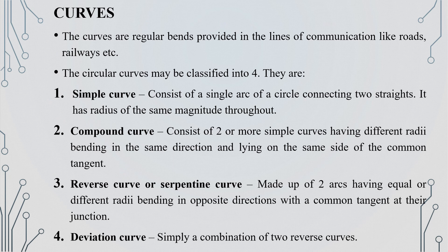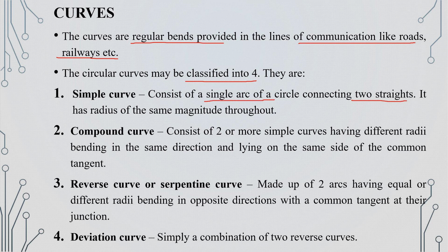Curves are regular bends provided in the line of communication, like roads and railways. The first type is a simple curve, which is connected by a single arc with the same radius throughout. The next one is a compound curve — made of two simple curves with different radii but in the same direction, with a common tangent.